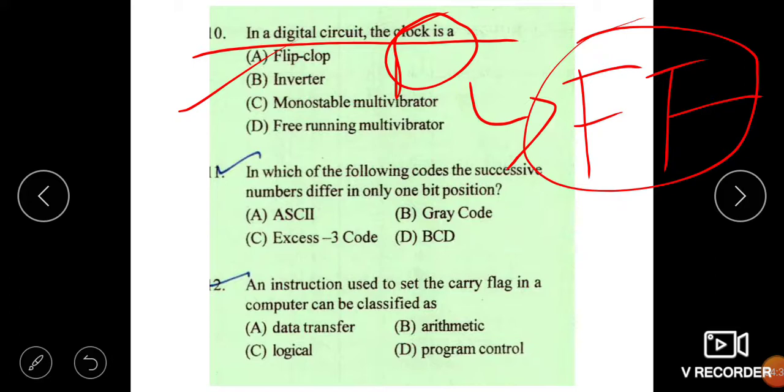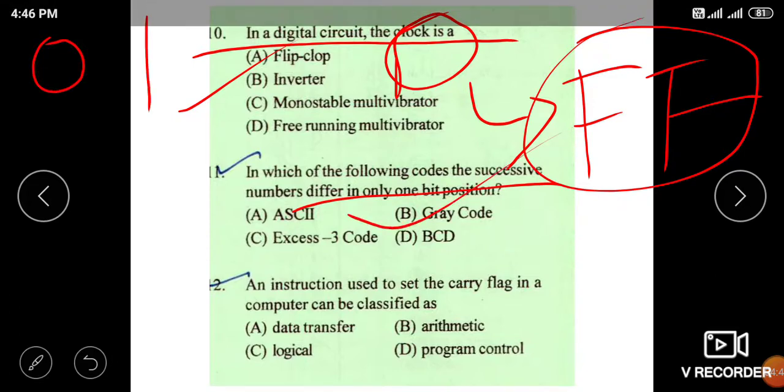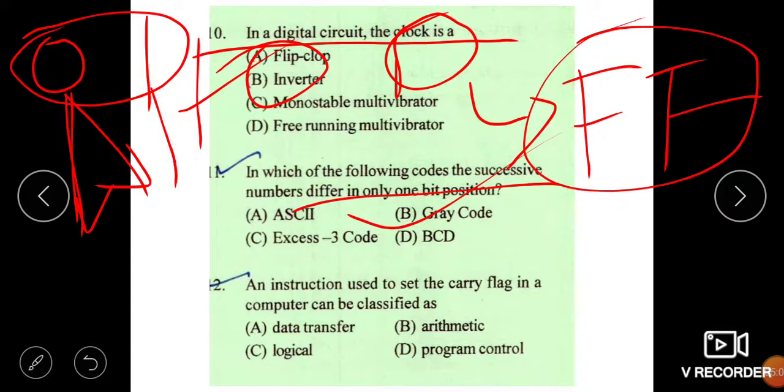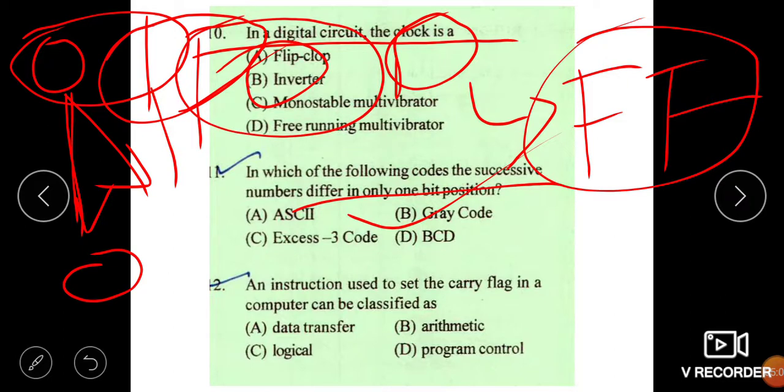Next question. In which of the following code successive numbers differ in only one bit? Only one bit, that is Gray code. Here we know how to convert Gray code. If here there are 0, 1, 1, 0, then we replace one bit. Here 0, 1 performs XOR. First bit is the same. Then next two bits perform the XOR operation and we get the value. In this way, we generate the Gray code. Option B is correct.